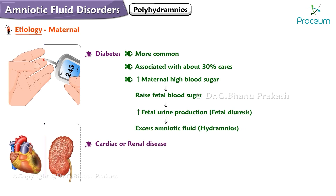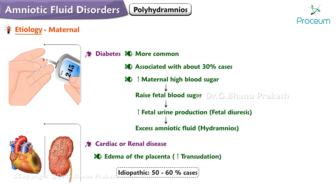Cardiac or renal disease may lead to edema of the placenta, leading to an increase of transudation. Polyhydramnios is idiopathic in about 50–60% of cases.